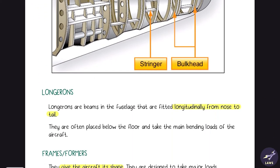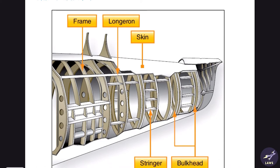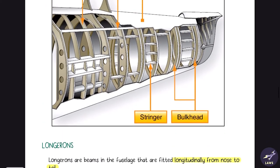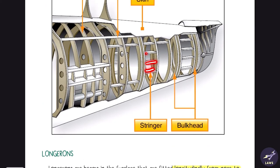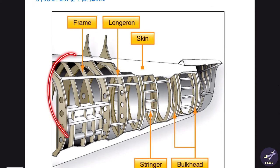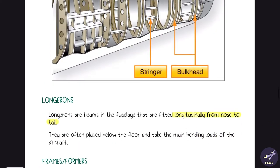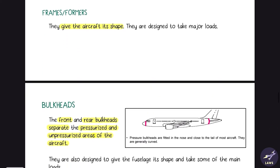Longerons are fitted longitudinally from nose to tail. The longerons are connected from front to back. Then we have stringers, which strengthen the skin. And then we have frames, which give the fuselage its shape.